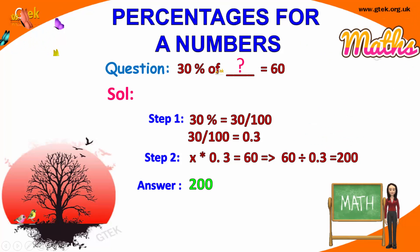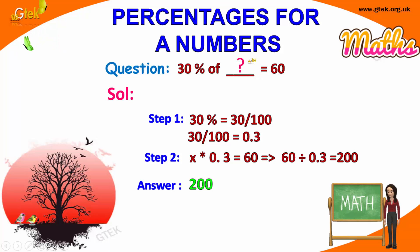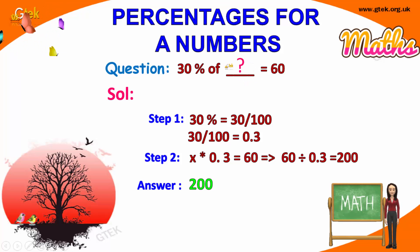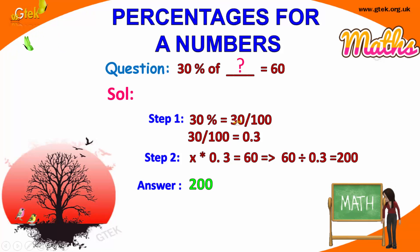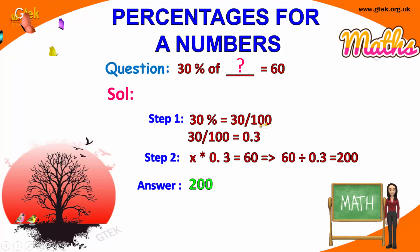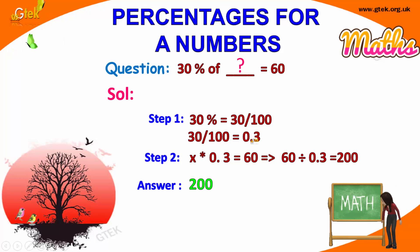Next problem: 30% of x is equal to 60. You need to find the value of x. 30% is 30 divided by 100, which equals 0.3.